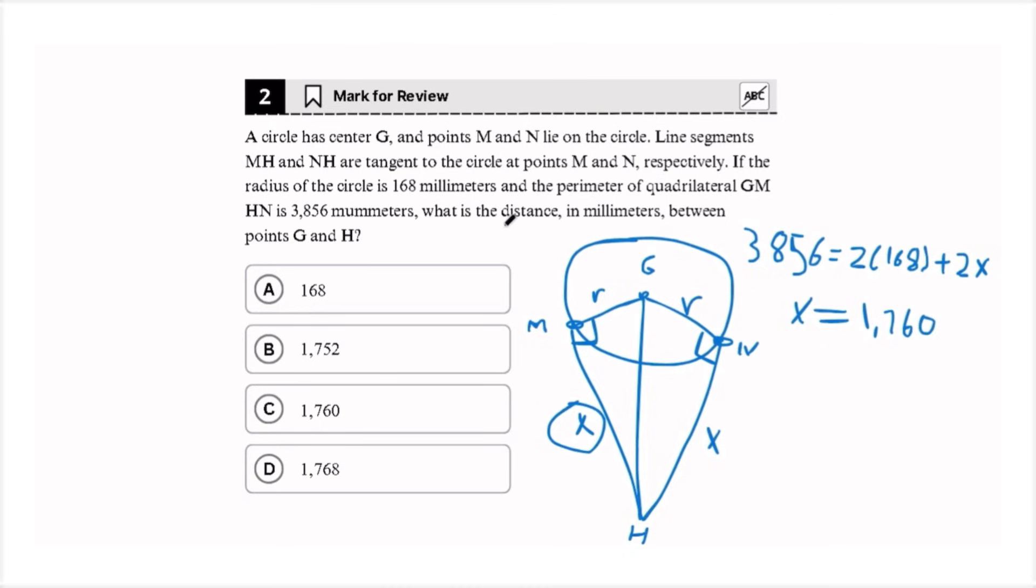So now all we have to do to find the distance between g and h, we just need to use Pythagorean theorem. So we take r squared plus x squared equals d squared, which is the distance. And we get that d is equal to 1768. Now let's move on to question number 3.